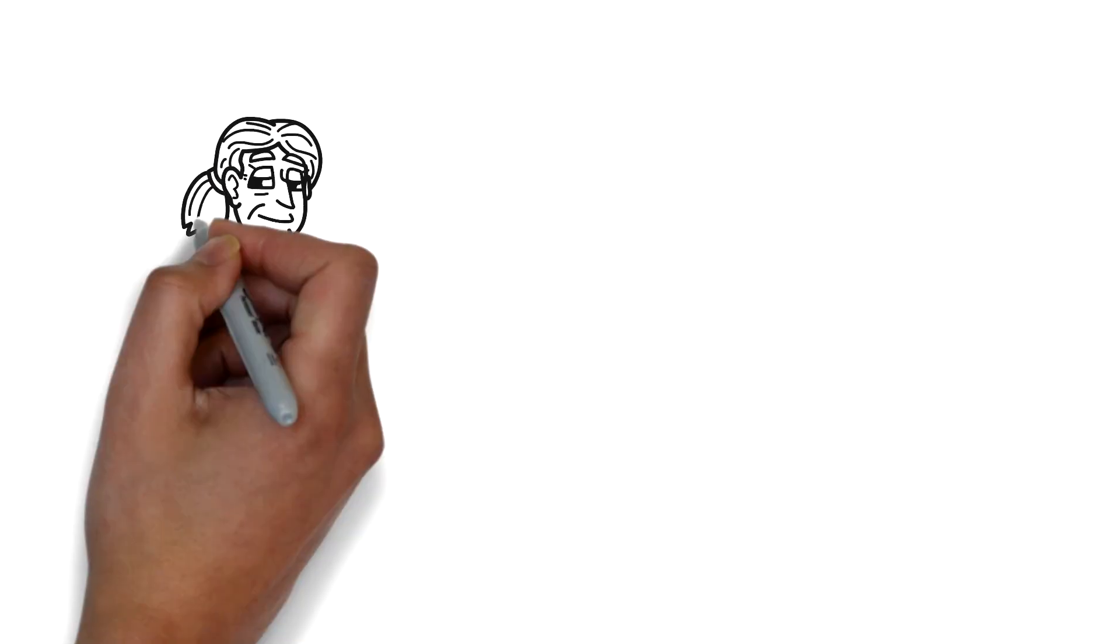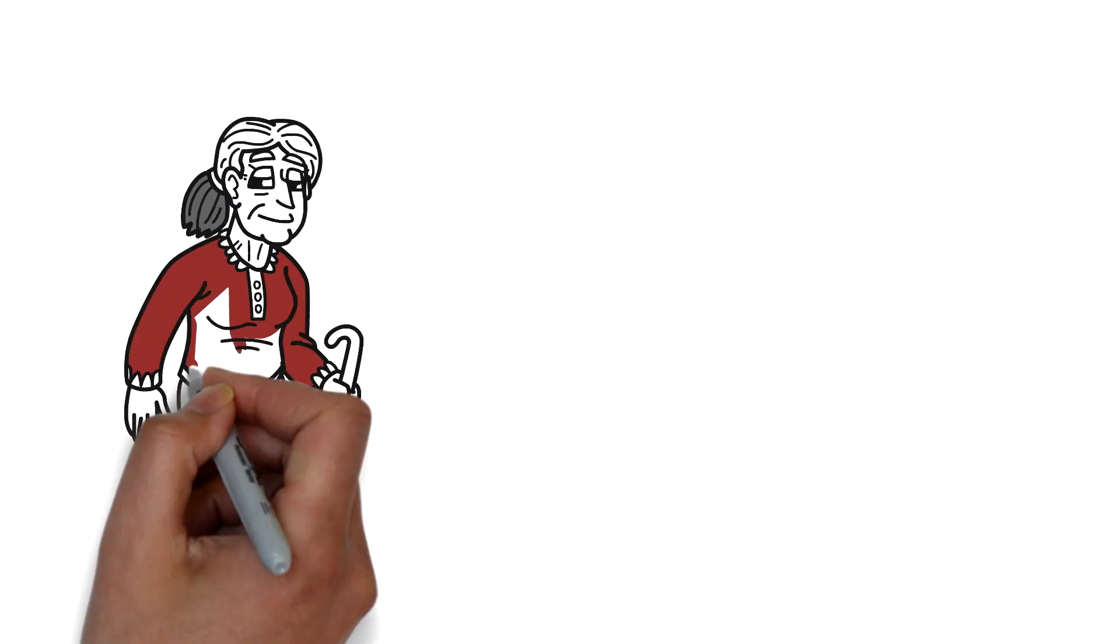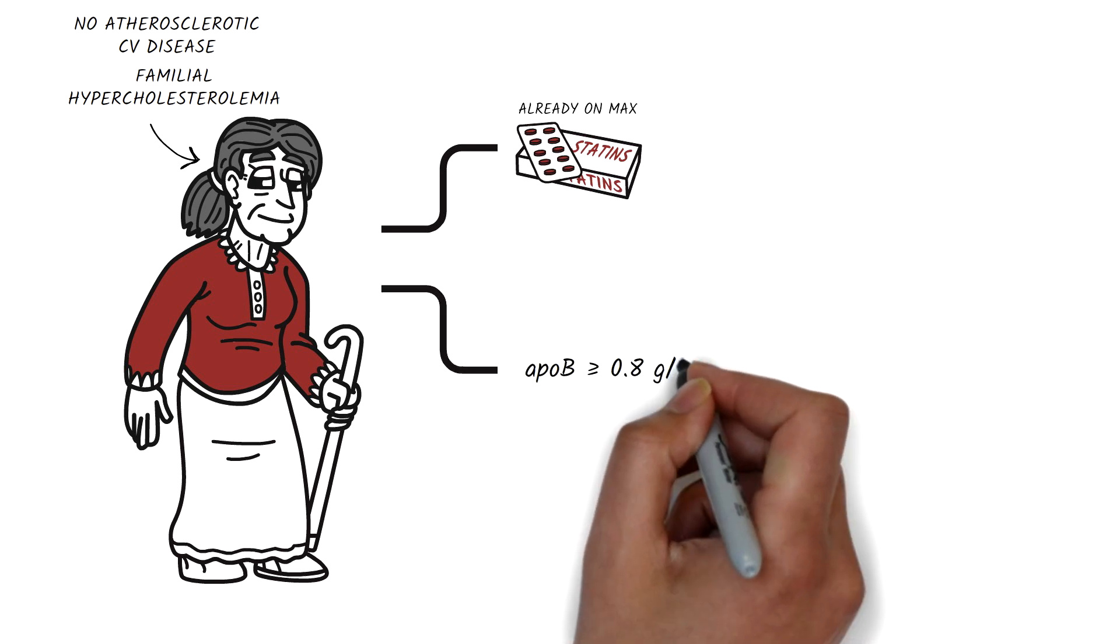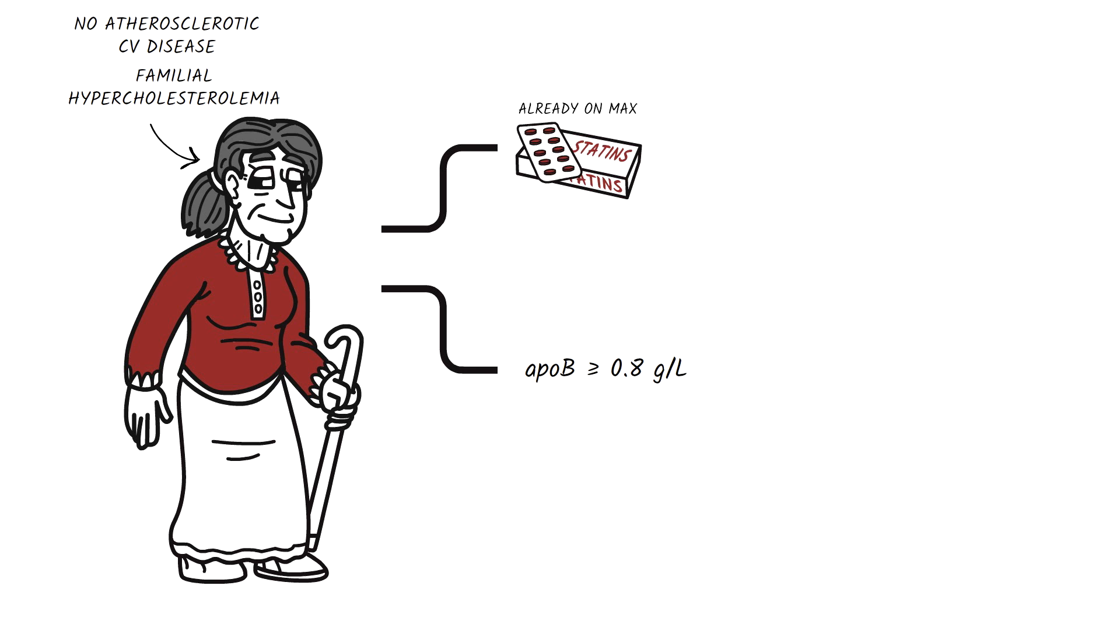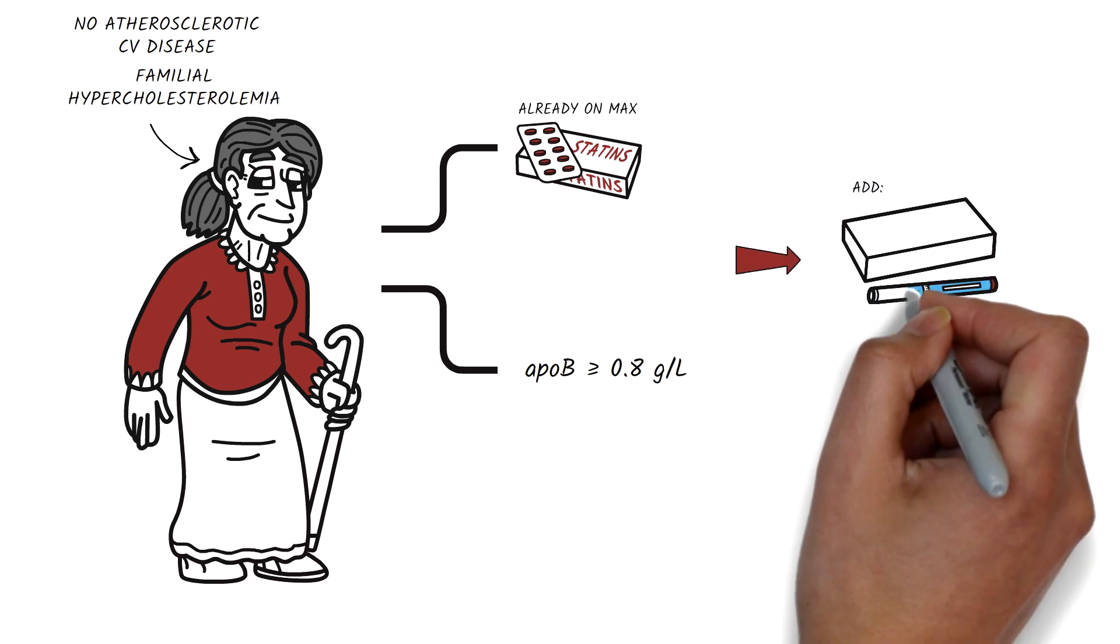If your patient has no atherosclerotic cardiovascular disease but does have familial hypercholesterolemia and is already on a maximally tolerated dose of statin with or without ezetimibe and their ApoB is still greater than or equal to 0.8 gram per liter, then PCSK9 inhibitors should be used.